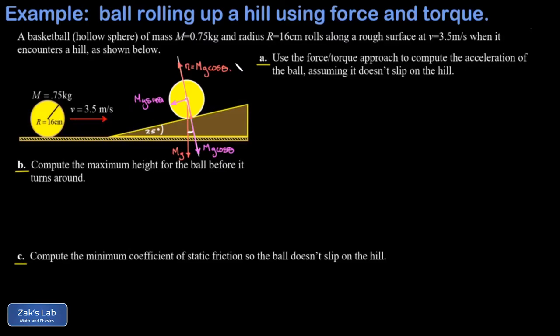To determine the friction force direction, we look at the ball's rotation — it's rolling clockwise up the hill and slowing down. Friction must exert a counterclockwise torque with respect to the center of mass to slow that rotation. Since friction acts parallel to the surface, pointing it up the ramp gives the needed counterclockwise torque. This is a static friction force because there's no slipping between the two surfaces.